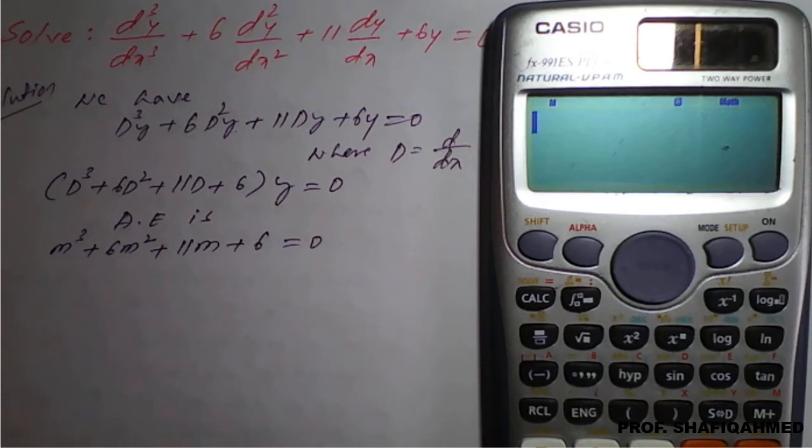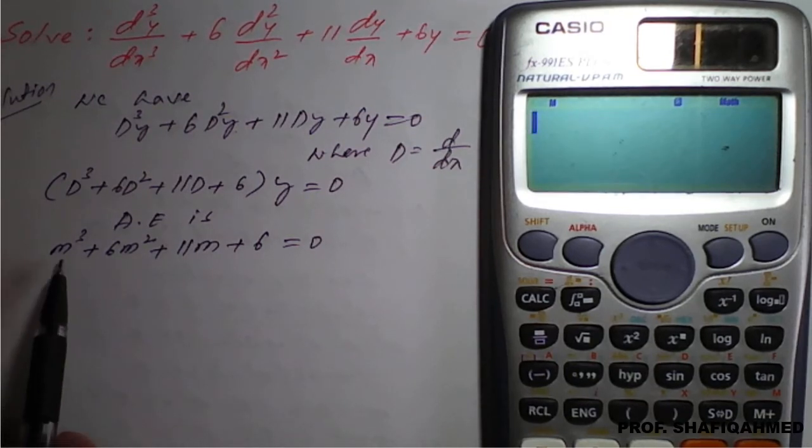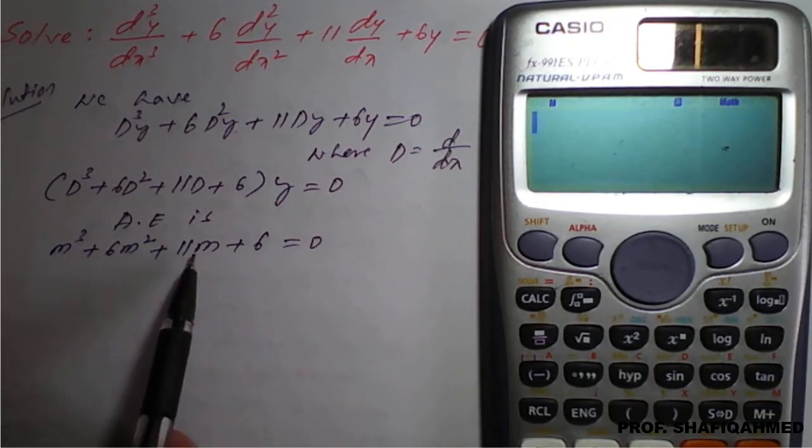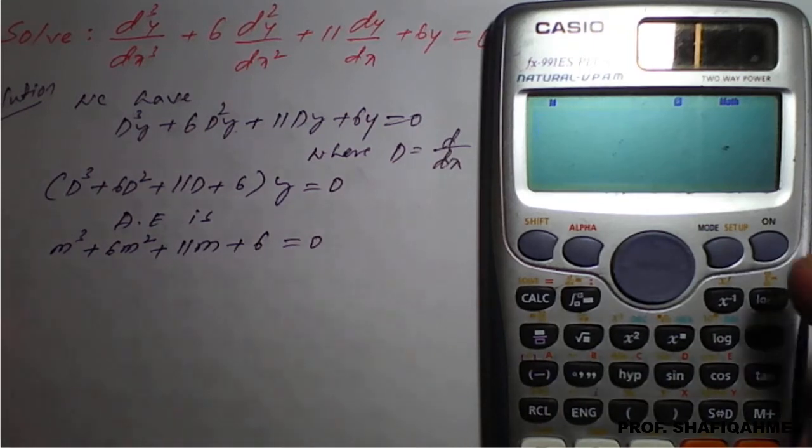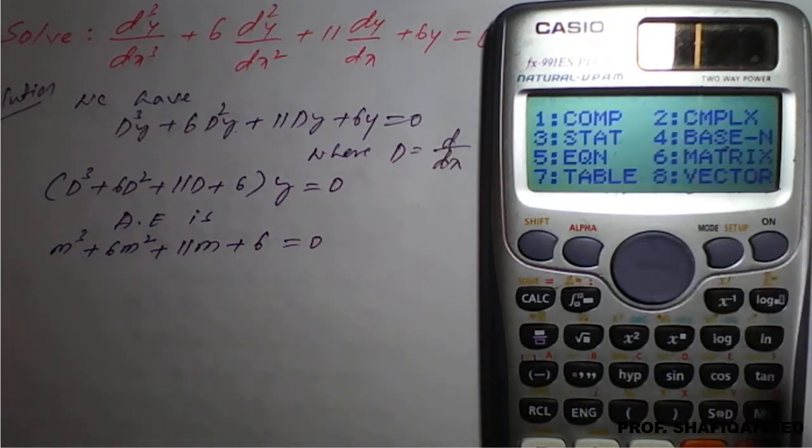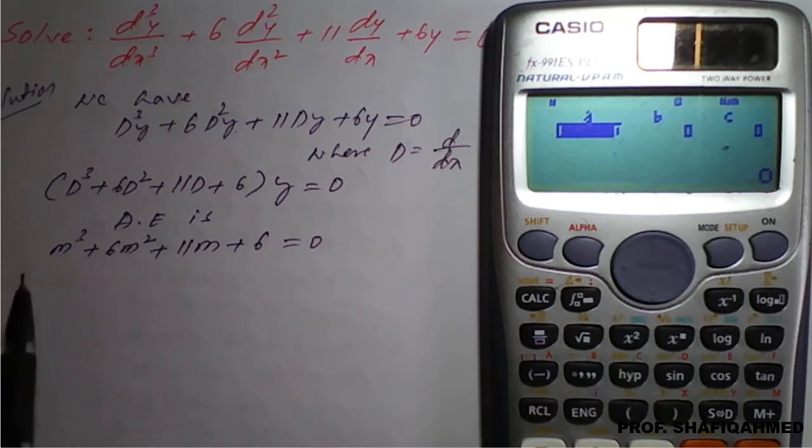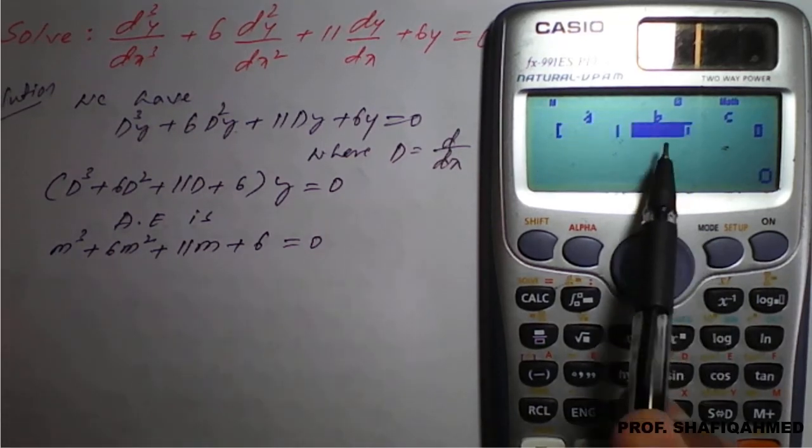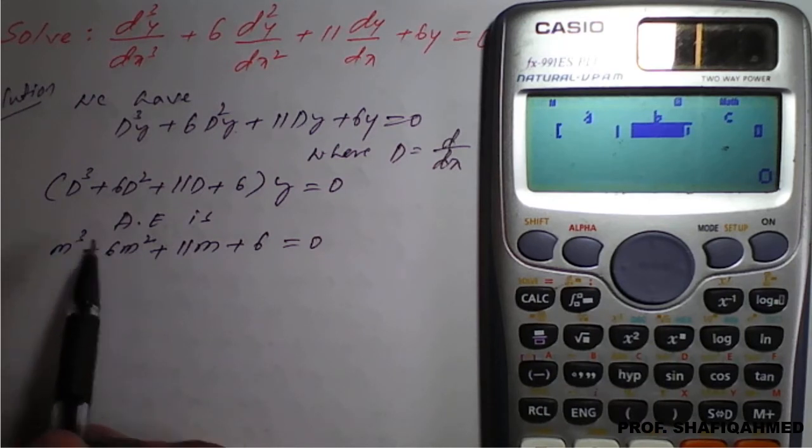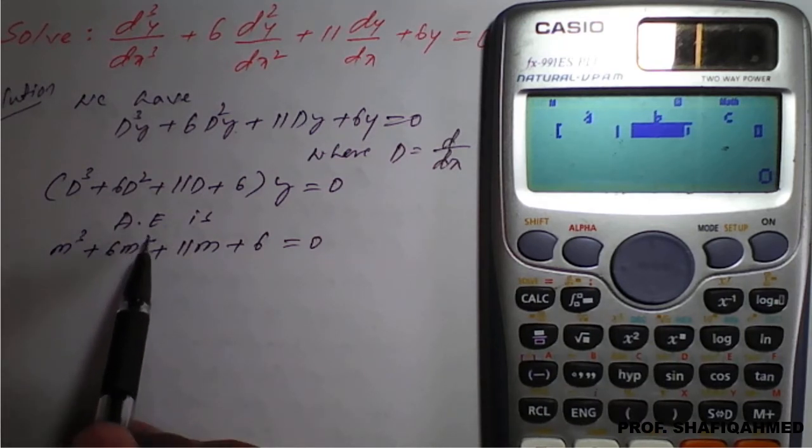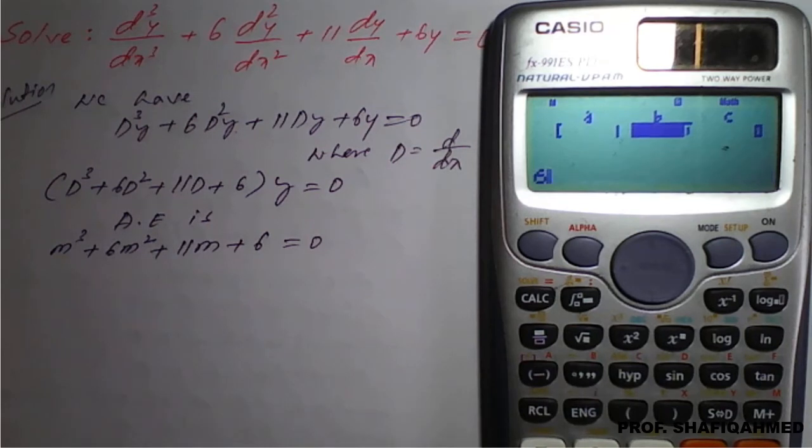Now we will go for the factorization of this m³ plus 6m² plus 11m plus 6 by using the calculator. More option, then select phi. In this cubic equation, you choose option 4. Coefficient of m³ is 1, press 1. After m³, you have to go for m². Coefficient of m² is 6. Then coefficient of m is 11 and the constant is 6.